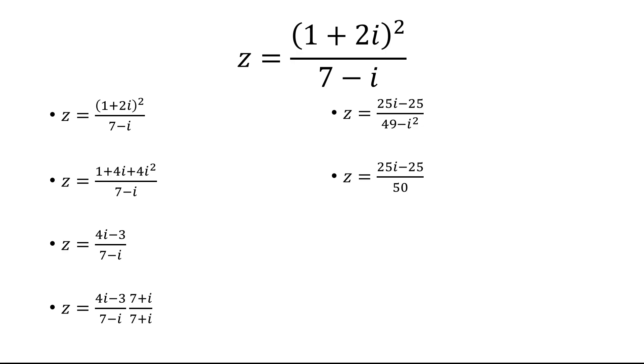Now we can split this up into two separate fractions. 25 over 50 becomes 1 half, so we have 1 half i minus 1 half as our final answer.